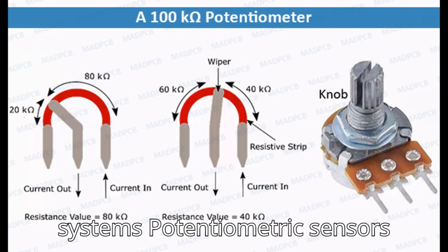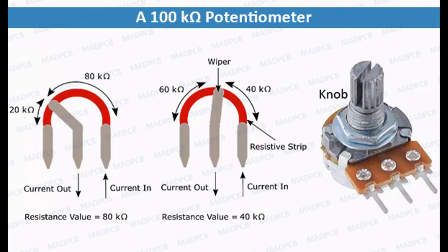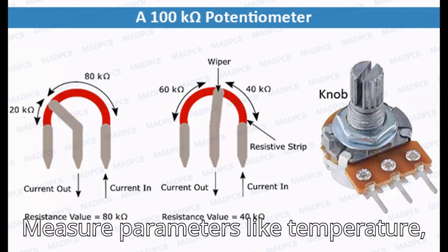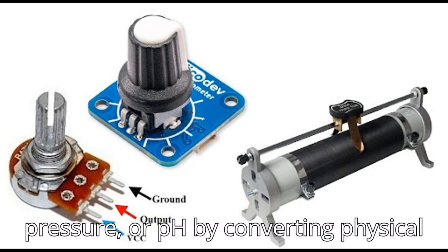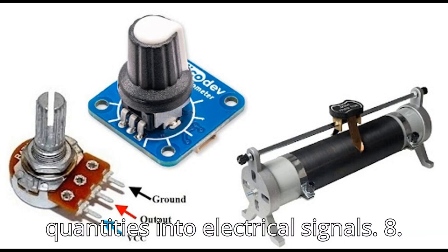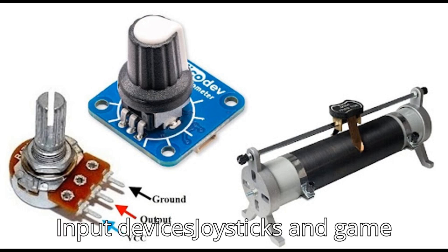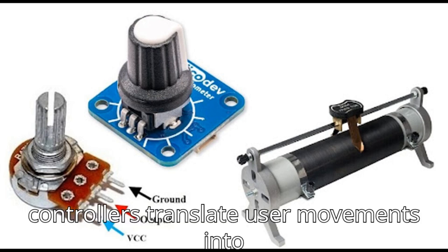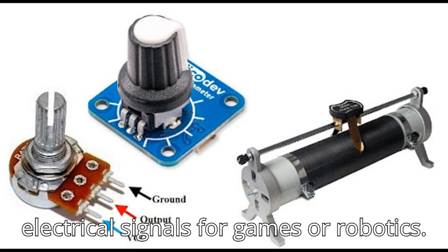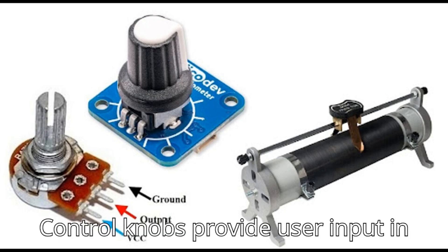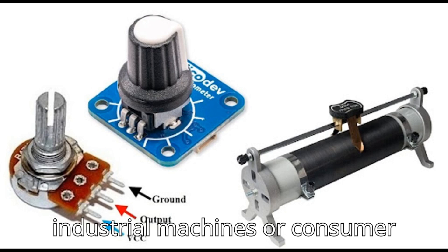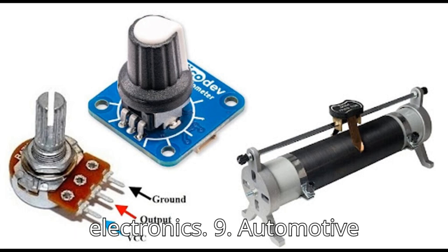Seventh, measurement systems: potentiometric sensors measure parameters like temperature, pressure, or pH by converting physical quantities into electrical signals. Eighth, input devices: joysticks and game controllers translate user movements into electrical signals for games or robotics. Control knobs provide user input in industrial machines or consumer electronics.